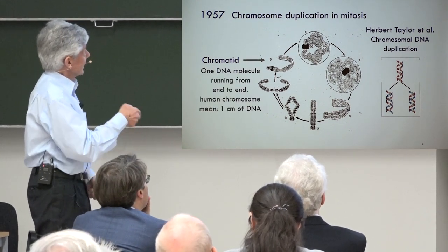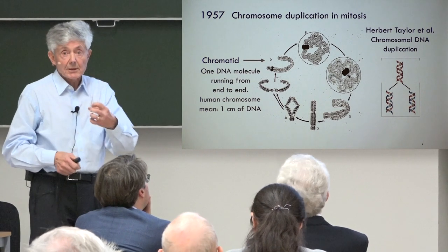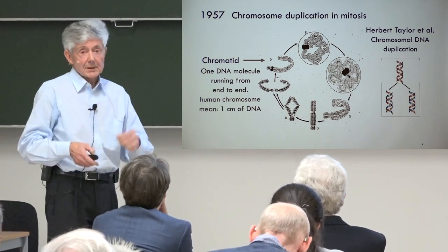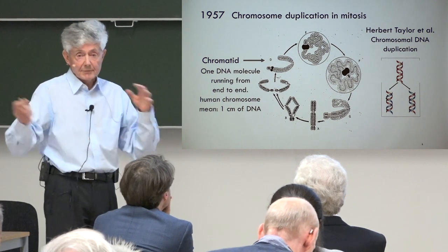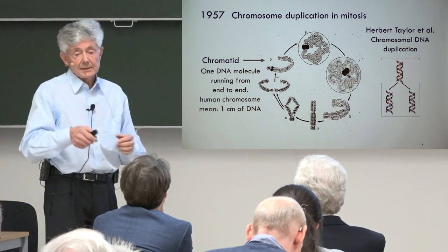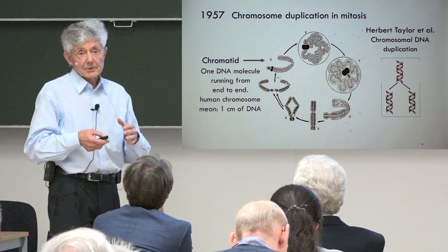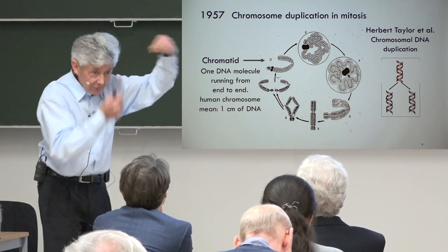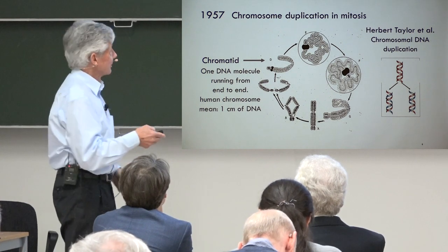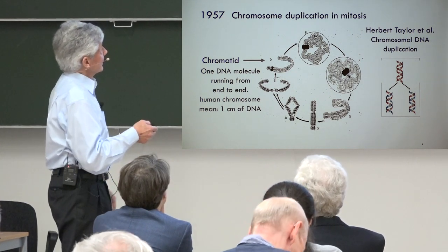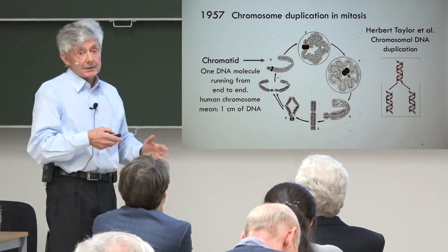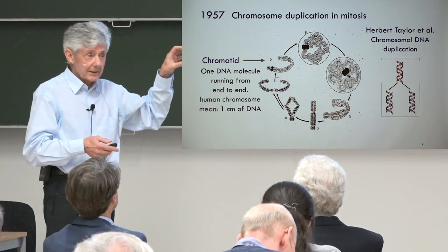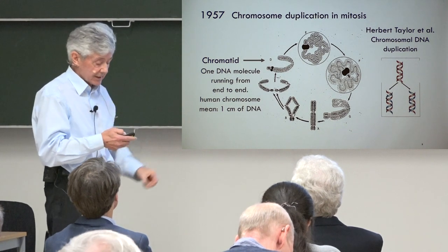To give you an impression of how much DNA this is: the human nucleus contains about two meters of DNA. An average human chromosome has about one centimeter of DNA — one molecule running from one end to the other, and only one. This was questioned later, but in the meantime it is established knowledge.